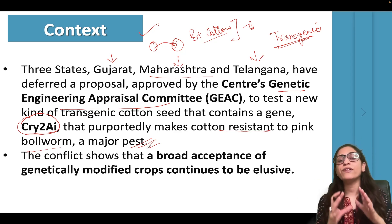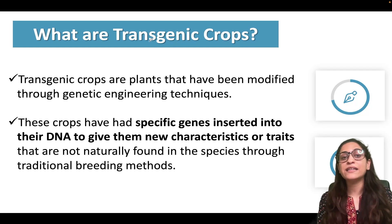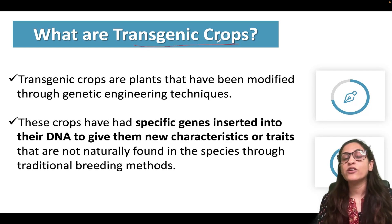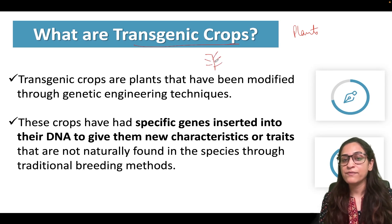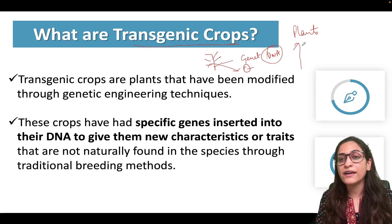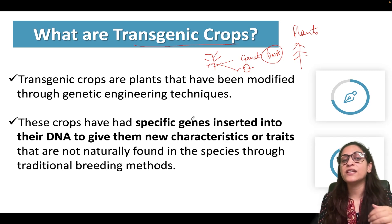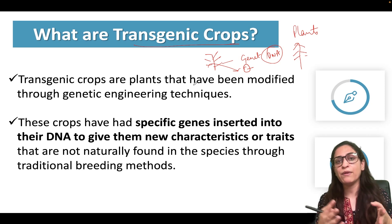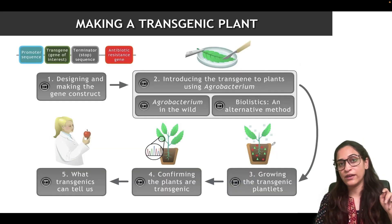This conflict shows that in India there is no acceptance of transgenic crops. Transgenic crops are plants which have been modified at the genetic level — at the DNA level. When we change the DNA and produce a new modified plant, we call it a transgenic crop. We add special genes for the benefit of the plant, like making it resistant to pink bollworms. Naturally found species are not transgenic; only lab-modified DNA changes are called transgenic.